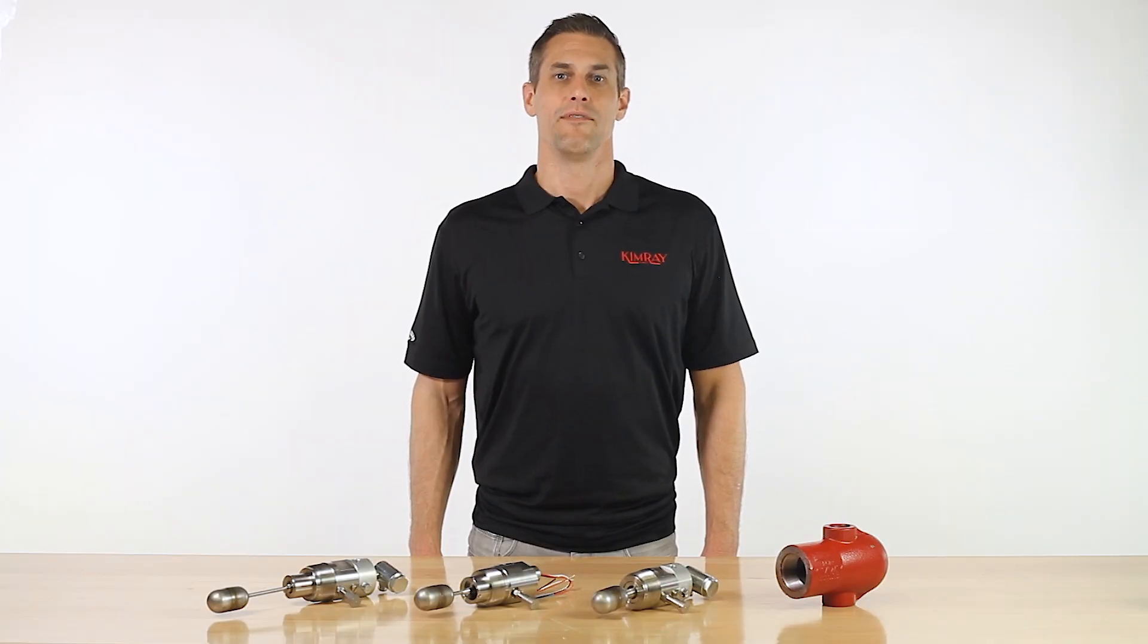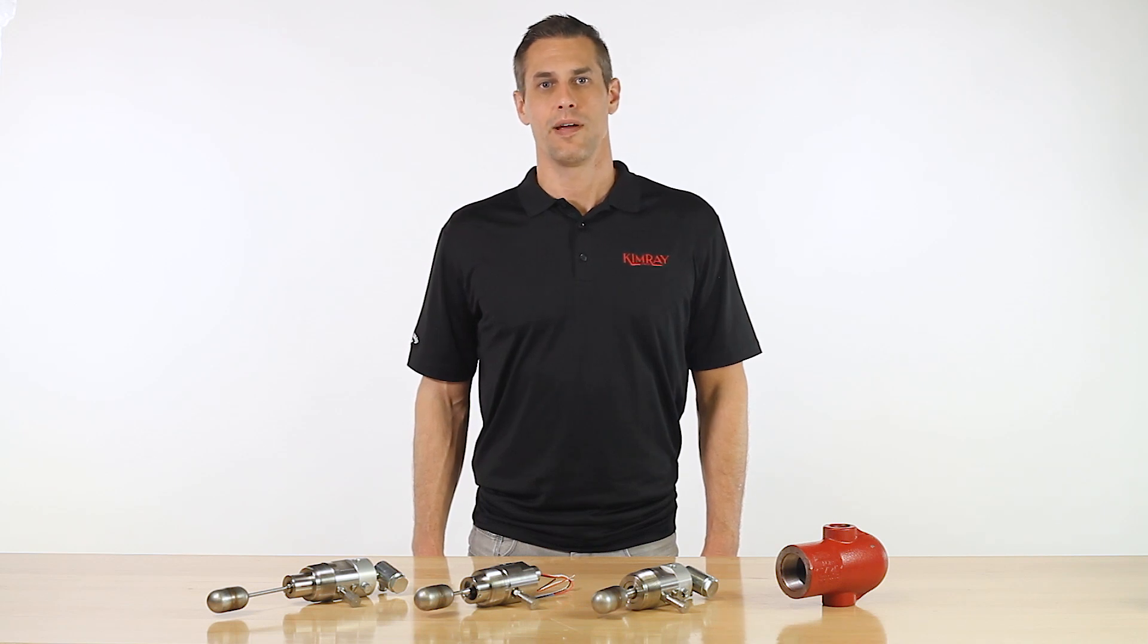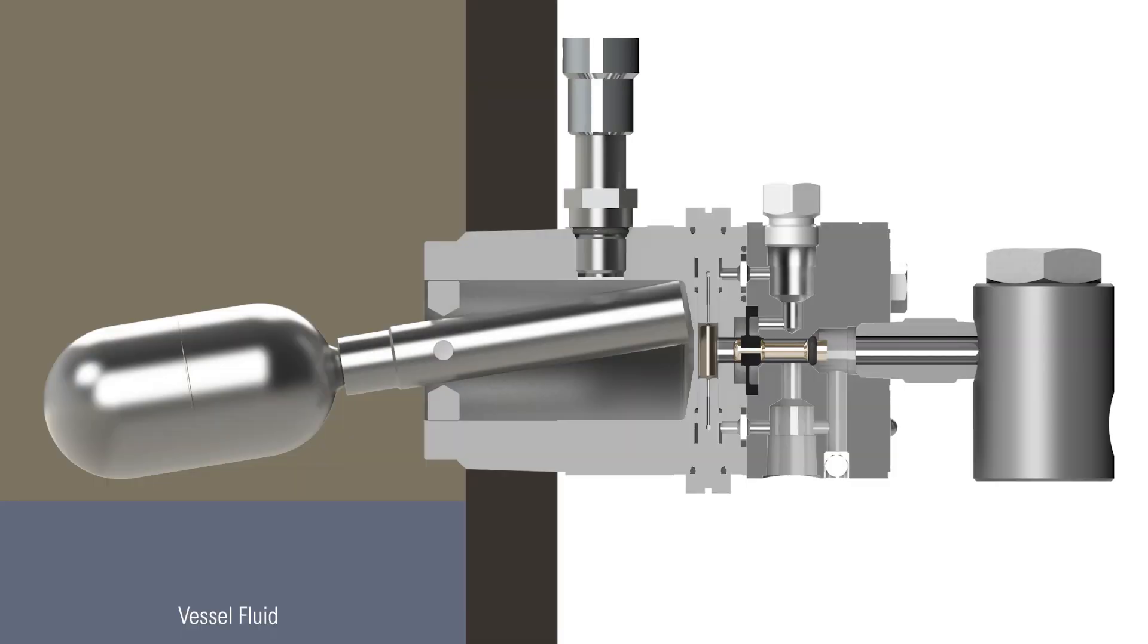A pneumatic level switch is used to maintain a desired level in separators, scrubbers, treaters, and other vessels. Here's how it works.